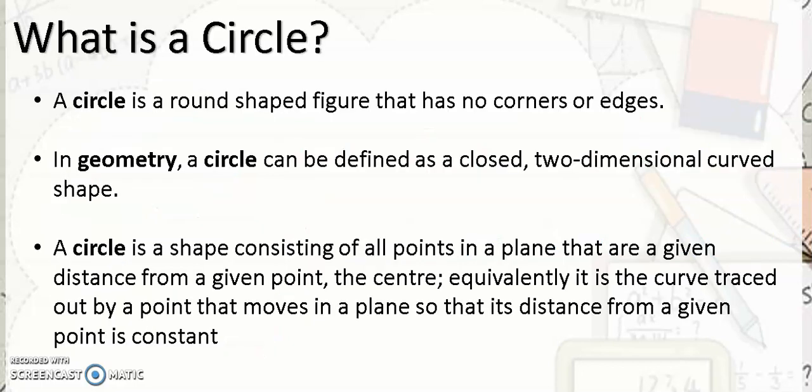So what is a circle? A circle is a round-shaped figure that has no corners or edges. In geometry, a circle can be defined as a closed two-dimensional curved shape. A circle is also a shape consisting of all points in a plane that are a given distance from a given point, the center.